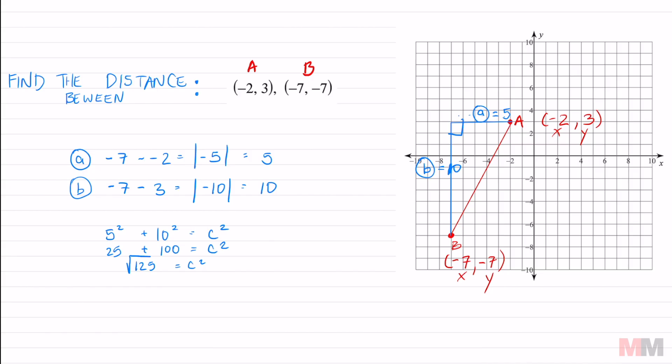And the last step of the Pythagorean theorem to get C by itself is just to square root both sides. If you do that correctly, and we're just gonna round, you're gonna get C as square root of 125. And if I round to the nearest 10th, that will get you 11.2.